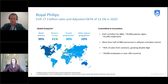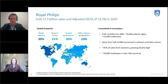Philips is a company with sales of about 17.3 billion. We have a global footprint, represented in more than 100 countries, and we have about 78,000 employees. It's important to mention that about half of the personnel are working in R&D and working in software and data science.